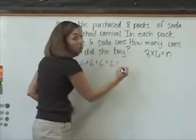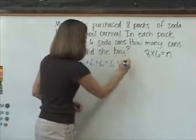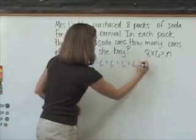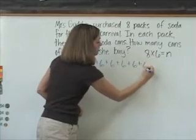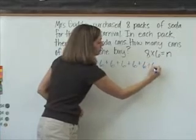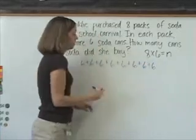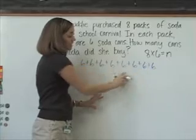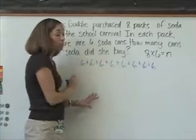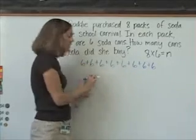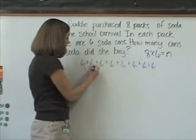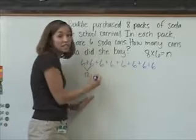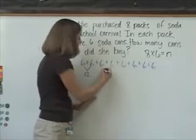We're going to write the number 6 eight times. So this is 8 sixes, and then we will take the 6s and add them together to make 12s, because 6 plus 6 is a known fact.